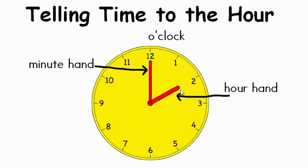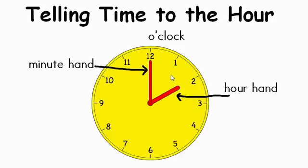The hour hand travels around the clock going to each different hour. So if we look right now at the hour that is here, it's at two. Next thing we have to do is look at the minute hand, and the minute hand is the long skinny hand here. That one controls the minutes — it shows how many minutes have passed.